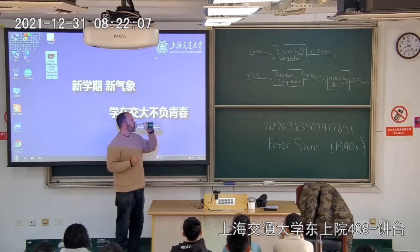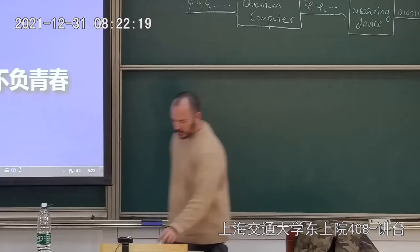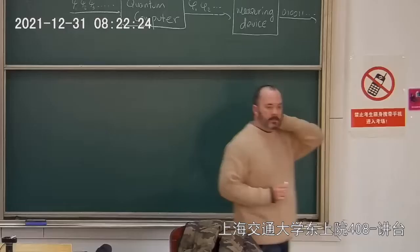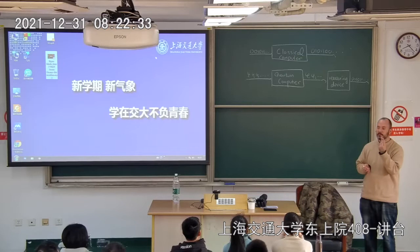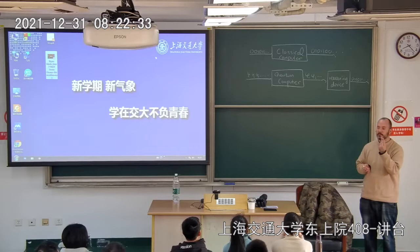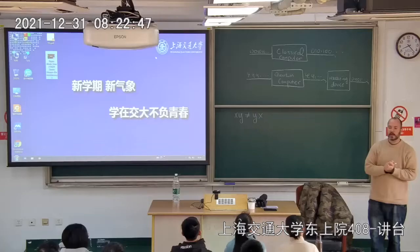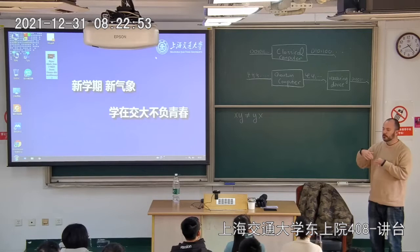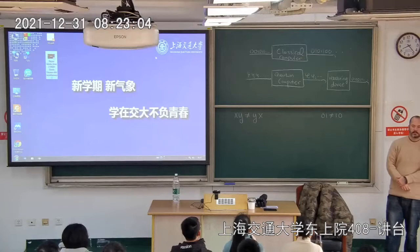All the mathematics we need for quantum computing is just manipulating polynomials in two variables, except that the two variables don't commute — x times y is not equal to y times x. In terms of bits, this means zero-one is not equal to one-zero — one bit string is not equal to the other.